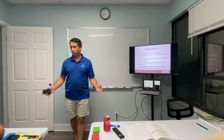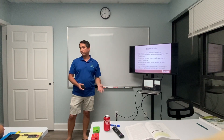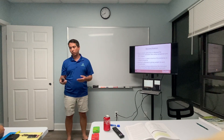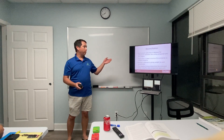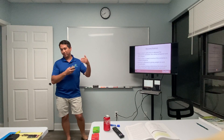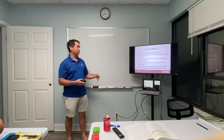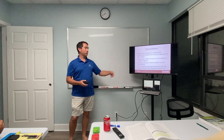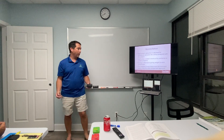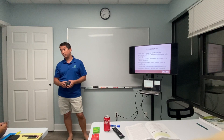Then we reconcile the comps. We put all the comps together, and the one most similar to the subject gets the highest weight — for example, 55% weight to the closest comp, 25% to the next, 20% to another. Each house is rated by its similarity to the subject, and that weight is used to determine the final sales comparison value.